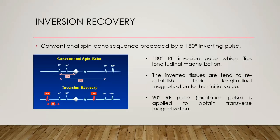Inversion recovery. A conventional spin echo sequence preceded by a 180 degree inverting pulse is called inversion recovery. This sequence starts with a 180 degree RF pulse, which flips the longitudinal magnetization Mz of all tissues in the opposite direction of the main magnetic field, to minus Mz. Due to longitudinal relaxation, the inverted tissues tend to re-establish their longitudinal magnetization to their initial value, by passing through the null value. Then, to measure the signal, a 90 degree RF pulse is applied to obtain transverse magnetization.